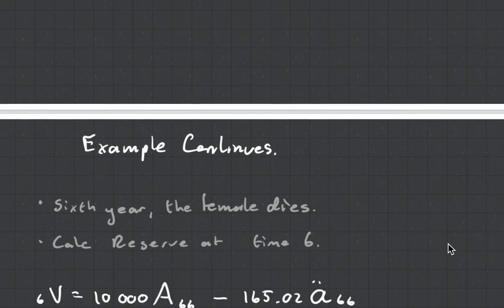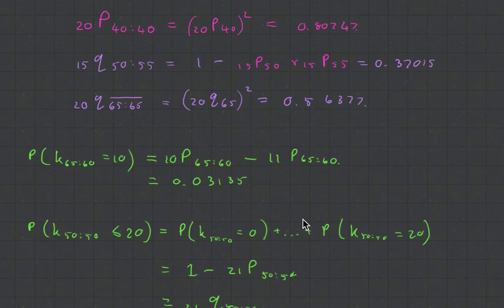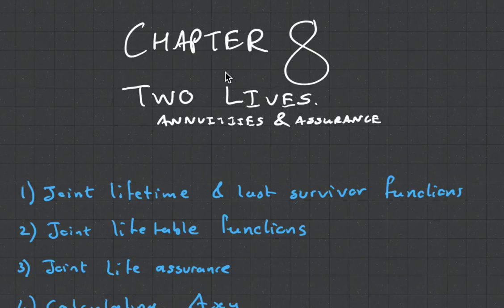It does get difficult when we go to chapter nine. But the big thing here to realize is: is it the last survivor, or must both people die in order for the benefit to pay out? And that is chapter eight - a very quick introduction to two lives, annuities and assurances. Make sure you know the knowledge behind this very well, because chapter nine does get very tricky. But I'll see you there. Study hard guys. Cheers.